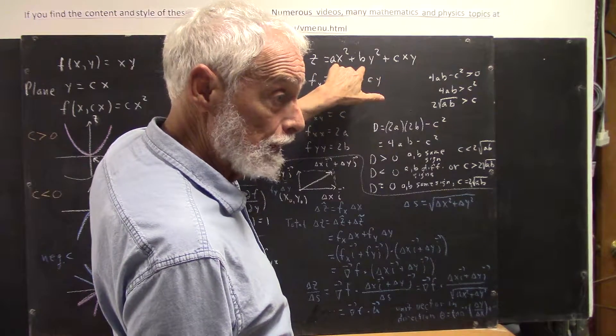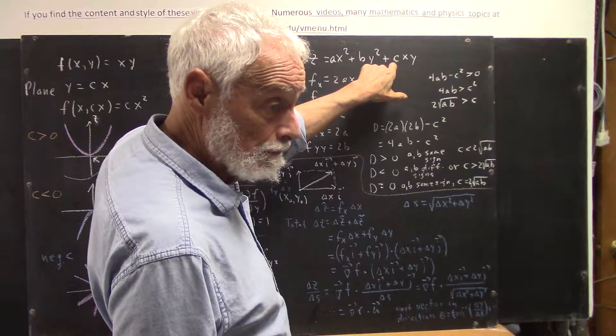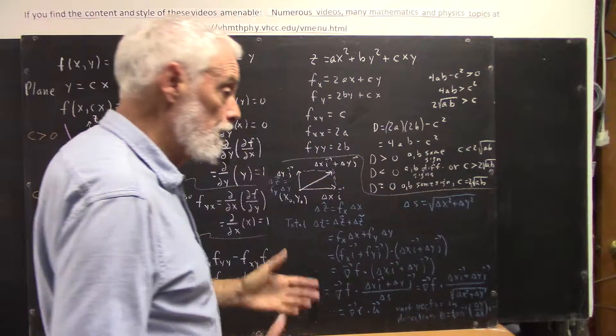If a and b have different signs, you have a saddle point. If a and b have the same sign, and c isn't too big, then you have either a max or a min.